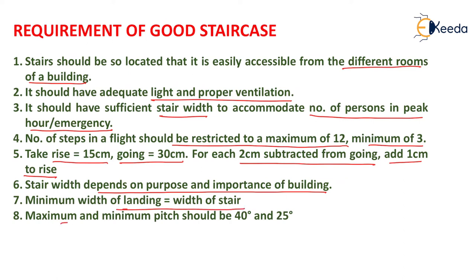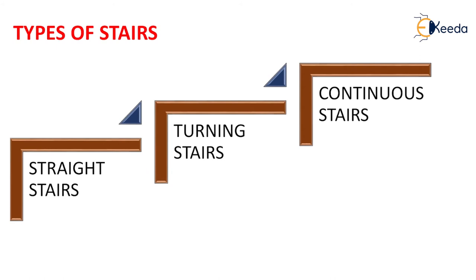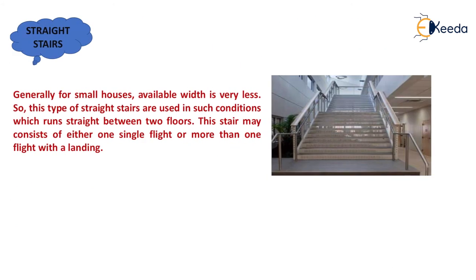Minimum width of landing equals the width of stair. Maximum pitch should be 45 degrees and minimum pitch should be 25 degrees. Now, different types of stairs: straight stairs, turning stairs, and continuous stairs. Straight stairs are generally used for small houses where available width is very less. This type runs straight between two floors and may consist of either one single flight or more than one flight with a landing.